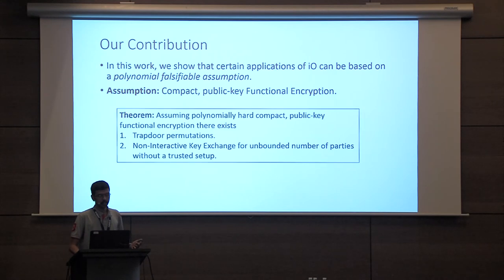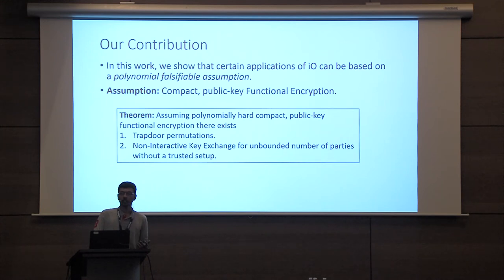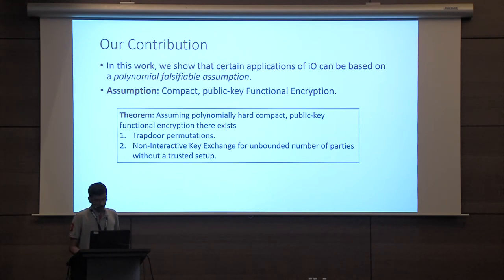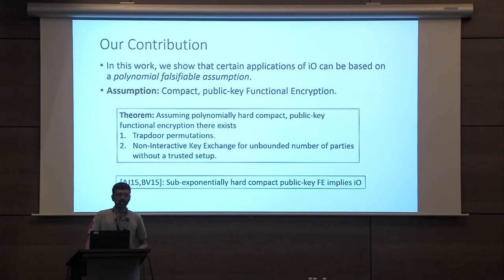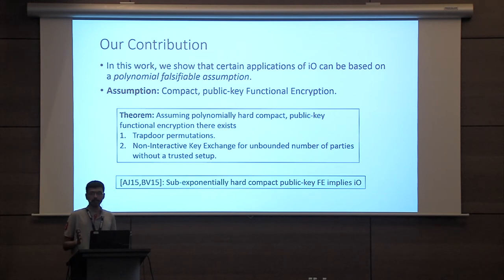The applications we get in this work are: first, a construction of trapdoor permutations, and second, a construction of non-interactive key exchange for an unbounded number of parties without a trusted setup. Prior to our work, the construction of trapdoor permutations required sub-exponentially hard IO. I would also remark that it was shown in independent works by Ananth-Jain and Bitansky-Vaikuntanathan that sub-exponentially hard compact public key functional encryption already implies full-fledged IO, whereas in this work we rely only on polynomially hard compact public key functional encryption, which is a quantitatively weaker security assumption.